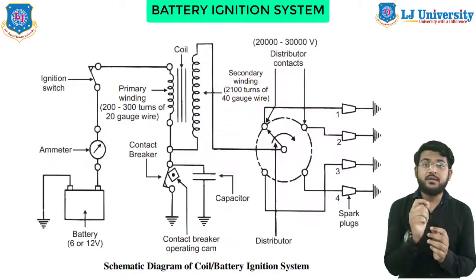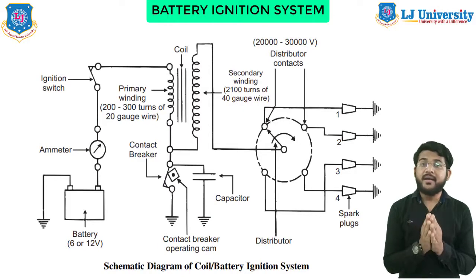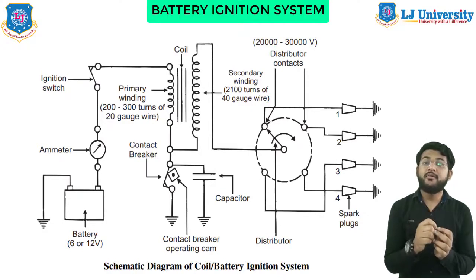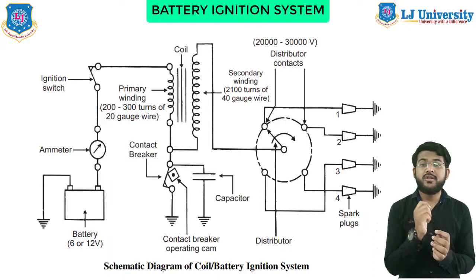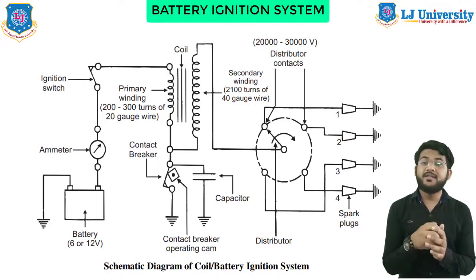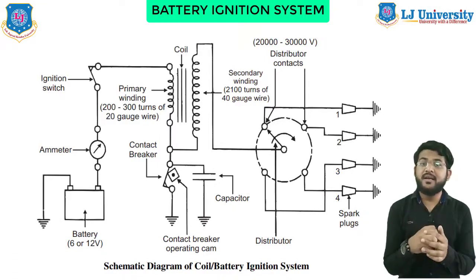The figure shows the diagram of the battery ignition system for a four-cylinder petrol engine. It mainly consists of a 6 or 12 volt battery, ignition switch, auto transformer, contact breaker, capacitor, distributor rotor, distributor contact points, and spark plugs. Since this is for a four-cylinder engine, there are four spark plugs and the contact breaker cam has four corners. For a six-cylinder engine there would be six spark plugs and the contact breaker cam would be a perfect hexagon with six corners.